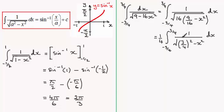So, using the result that we've got over here, this will be equal to 1 quarter. And then, we've got the inverse sine of x divided by a, a being 3 quarters. So, if we do x divided by 3 quarters, that's going to end up as 4x over 3. And then, this will be between the limits of minus 3 quarters to 3 quarters.